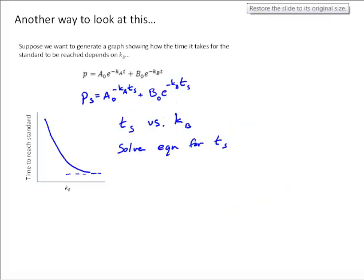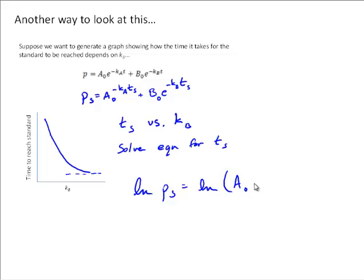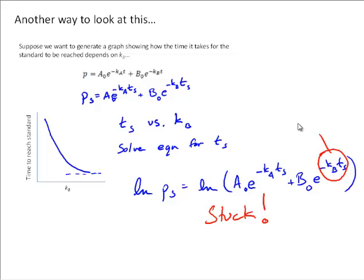If we wanted to solve that for tₛ, we need to get that t out of the exponentials. The first thing we might do is take the natural log of both sides. And we're kind of stuck, because there's no way to simplify that right-hand side. We need to separate these, and it's not possible.